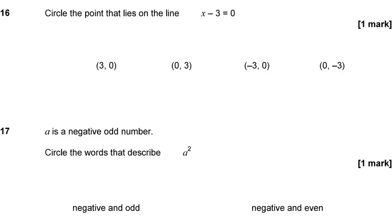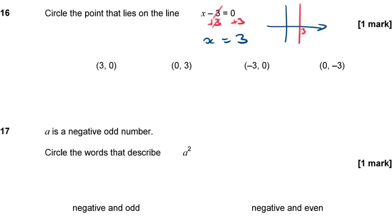Question 16: Circle the point that lies on the line x − 3 = 0. Adding 3 to both sides gives x = 3. Any line of the form x = number is a vertical line through that value. Any point on that line has x-coordinate 3, so we need the point with x-coordinate equal to 3.